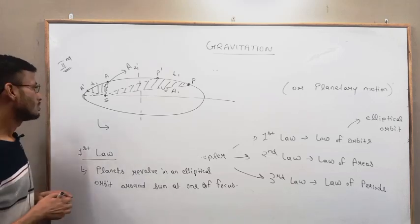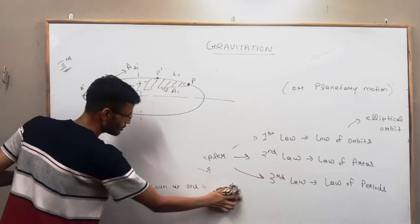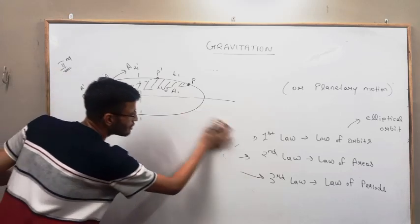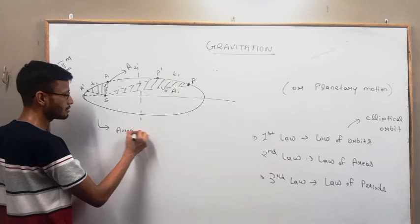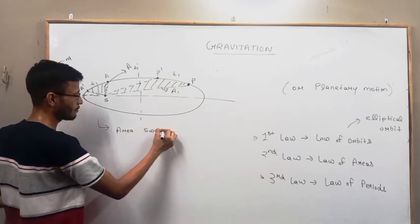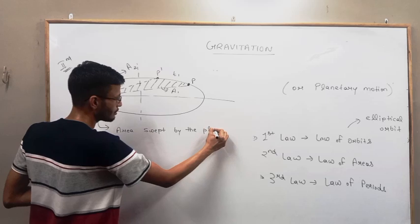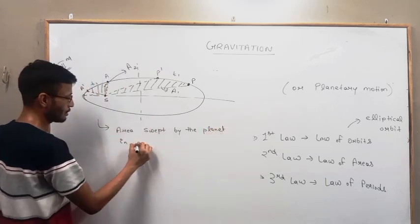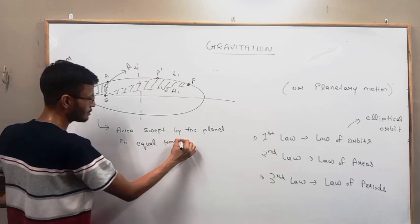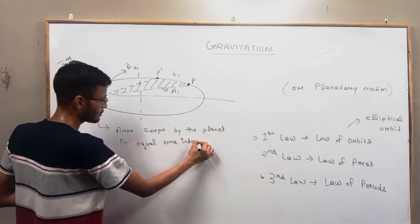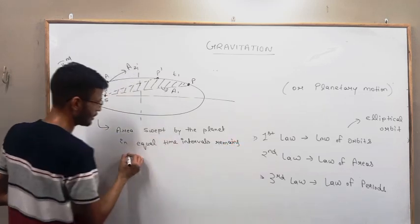Its proof you will study in higher classes, that is in class 11th. So we can write: area swept by the planet in equal time intervals remains same.